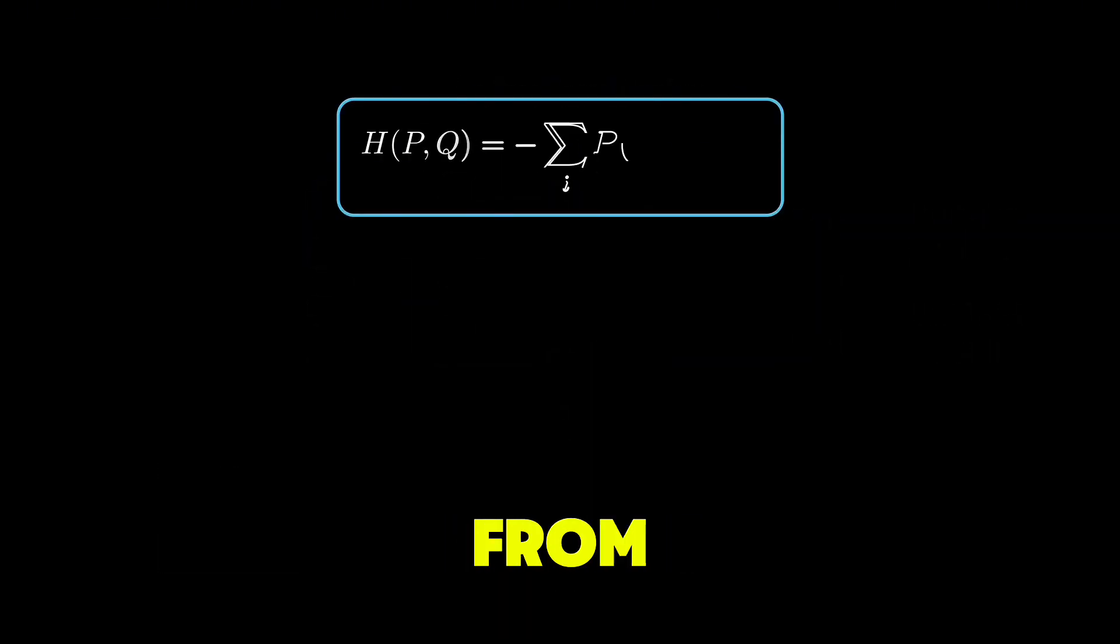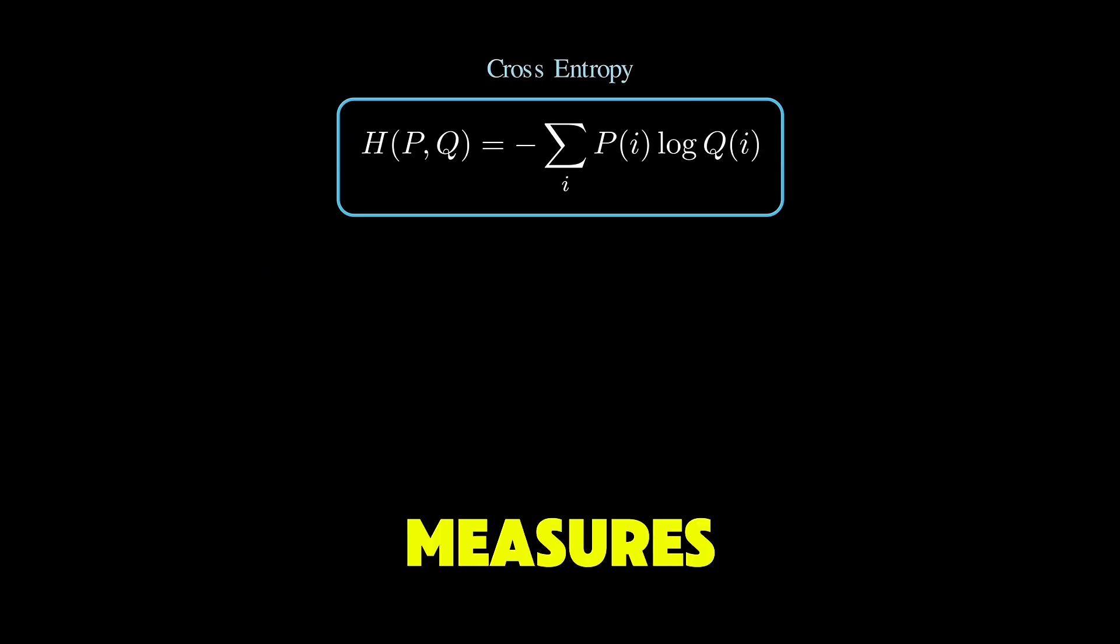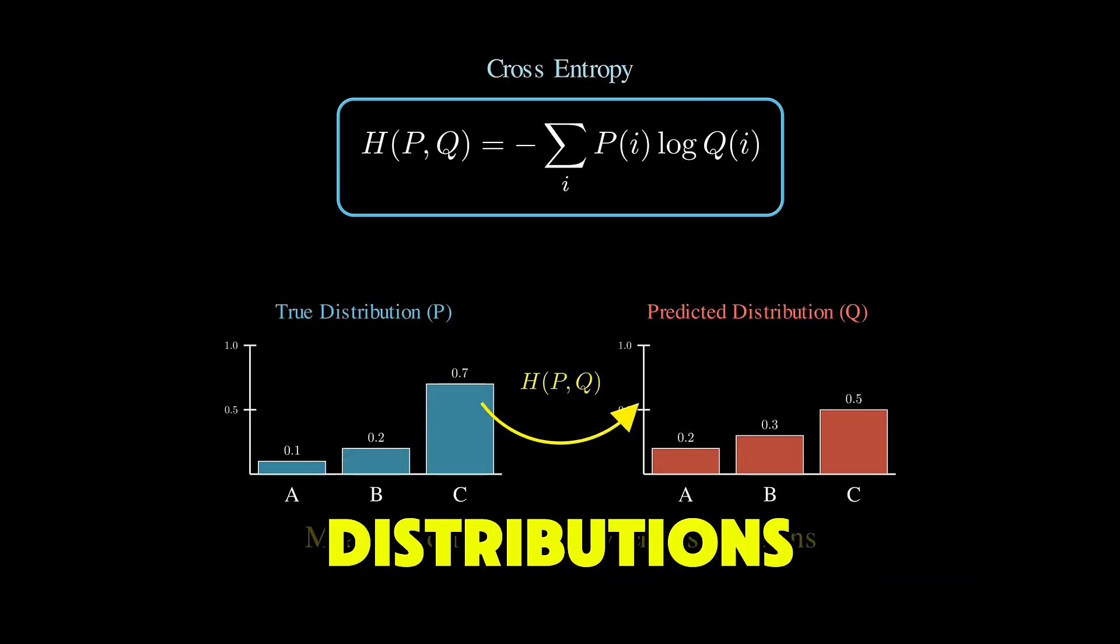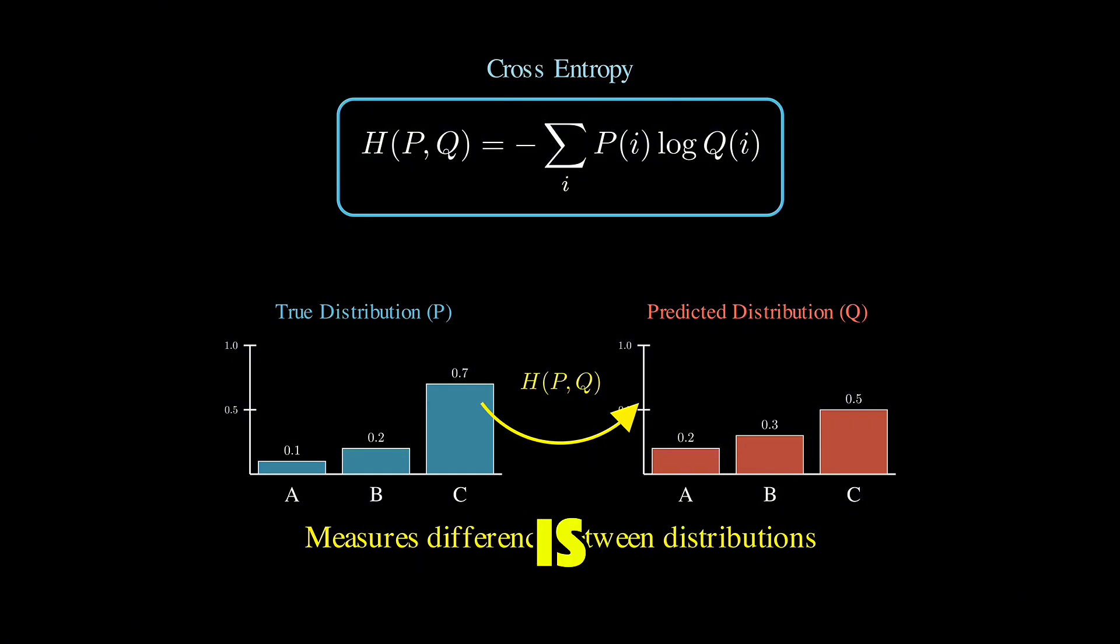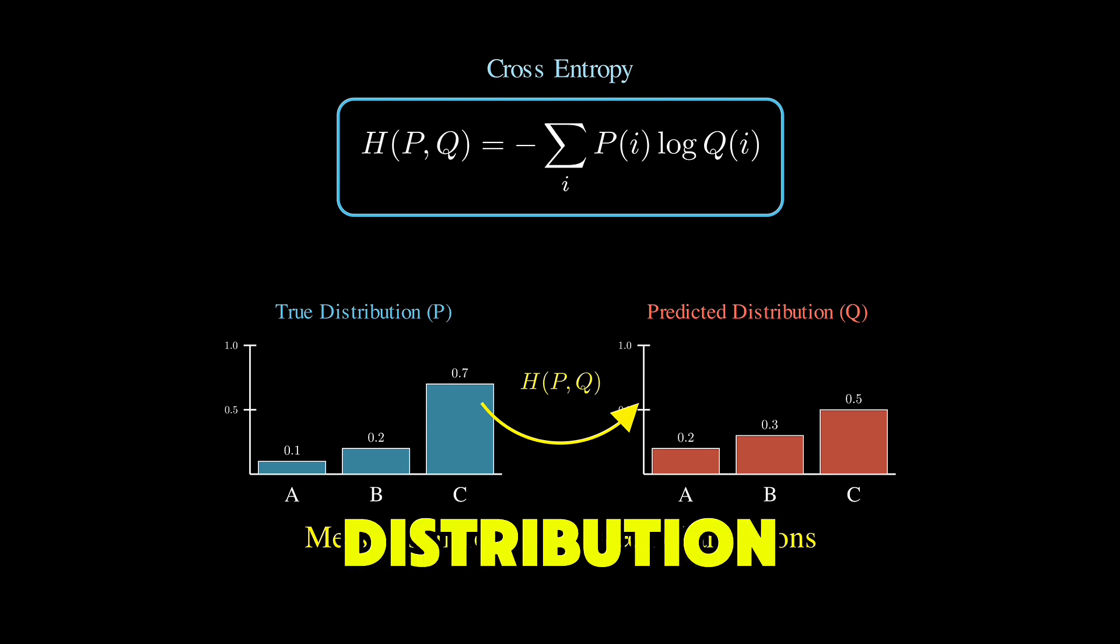It's a concept from information theory that measures the difference between two probability distributions. The formula is H(P,Q) = -sum P(i)log Q(i), where P is our true distribution and Q is our predicted distribution.